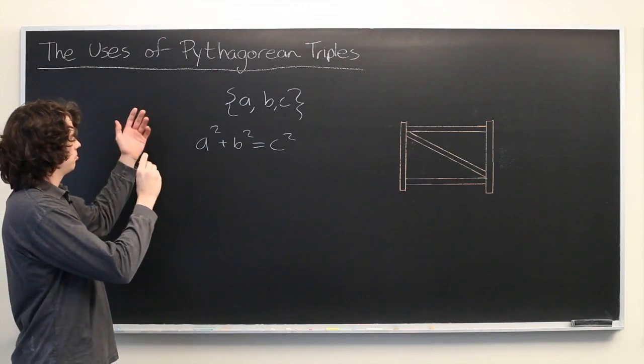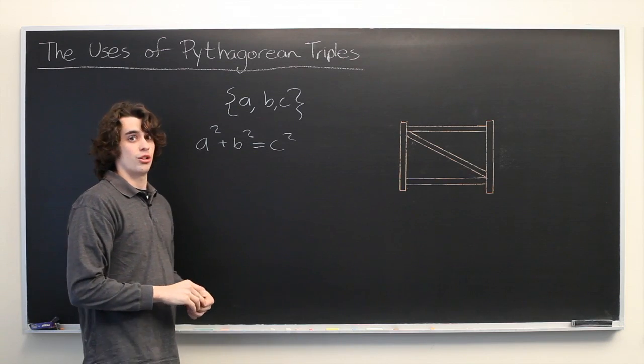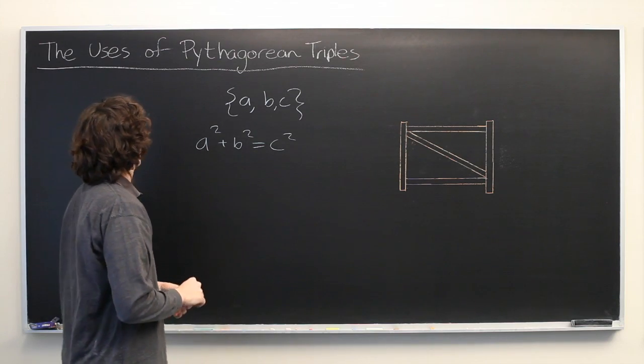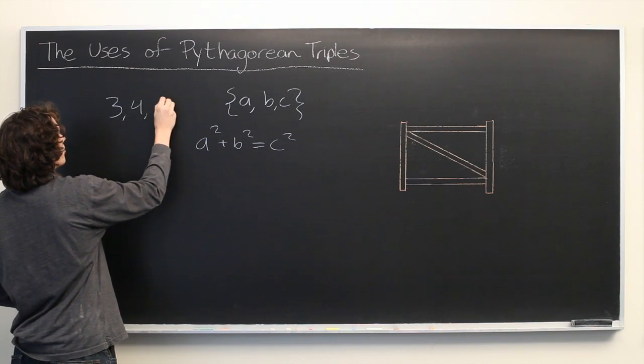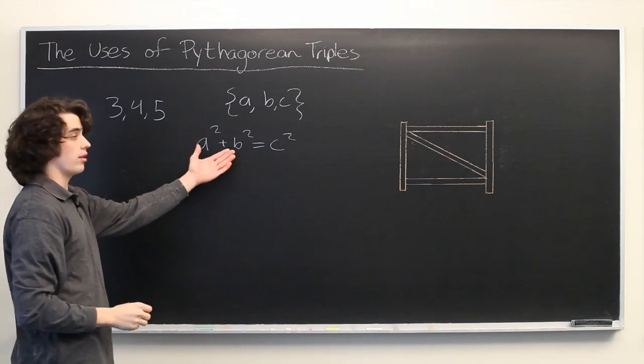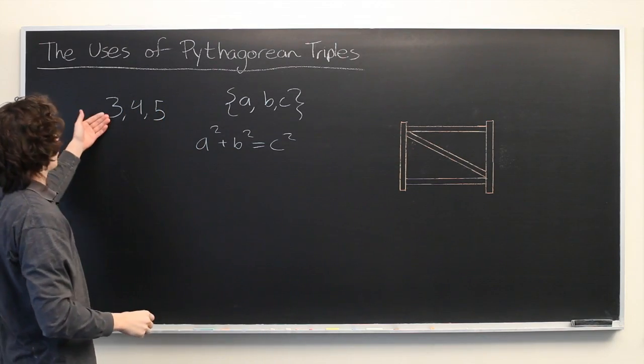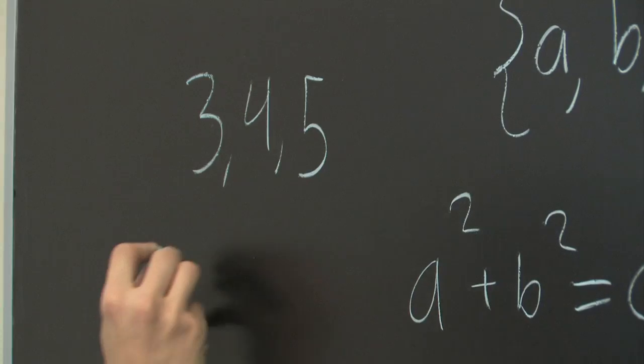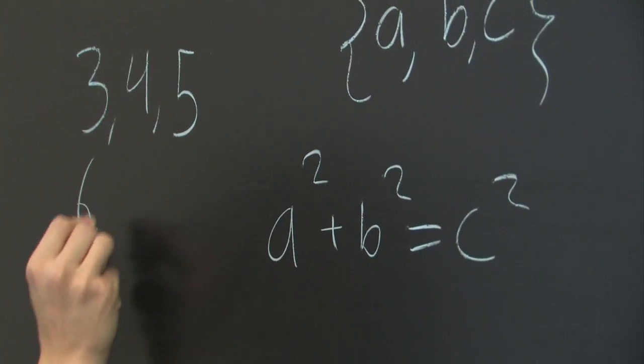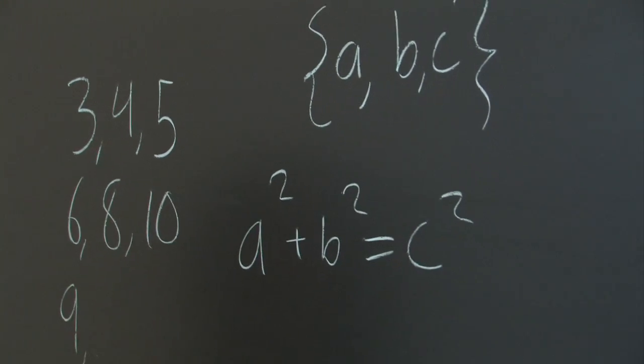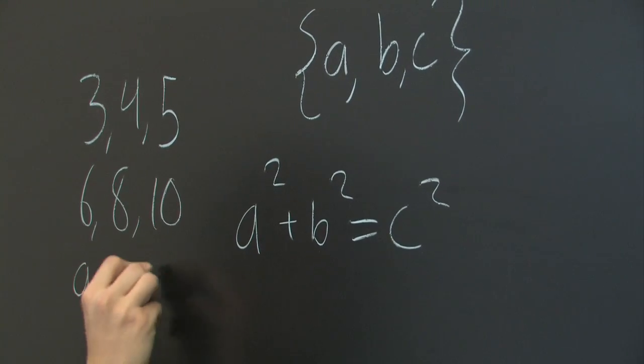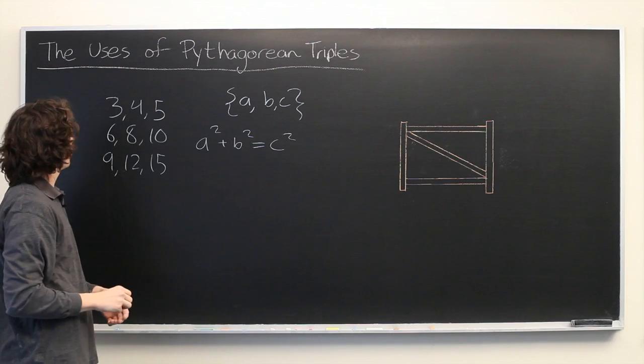There are lots of different combinations of integers for which this is true. For example, we have 3, 4, and 5 satisfy this. You can take multiples of this set. For example, you could multiply each number by 2, you get 6, 8, 10. You multiply each by 3, you get 9, 12, 15, so on and so forth.